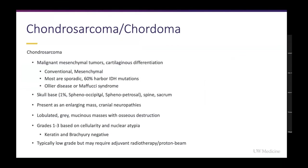We'll start with chordomas and chondrosarcomas. Chondrosarcomas are mesenchymal tumors with cartilaginous differentiation. There are two subtypes: conventional and mesenchymal. A majority of them are sporadic and interestingly harbor the same IDH mutations seen in gliomas. Their location is related to the osseous development of the cranium compared to the skull base — the cranium develops by intramembranous ossification while the skull base develops by endochondral ossification. During skull base development, trapped nests of primitive chondrocytes can undergo malignant transformation, forming chondrosarcomas.